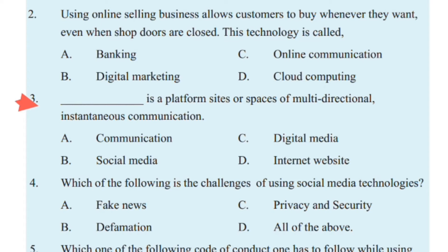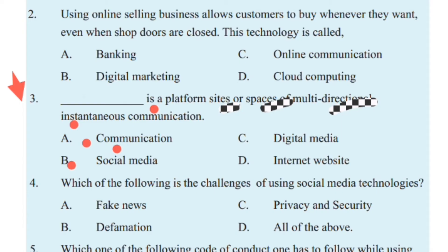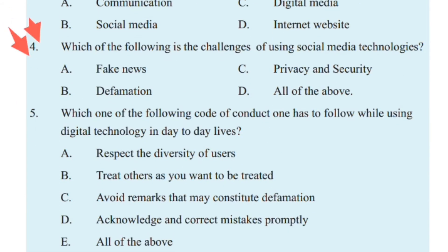A platform, site, or space of multi-directional instantaneous communication — the options are: A) communication, B) social media, C) digital media, D) the internet. Digital media is the right answer.